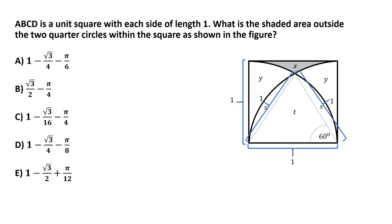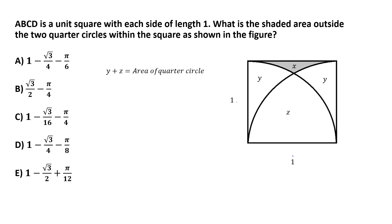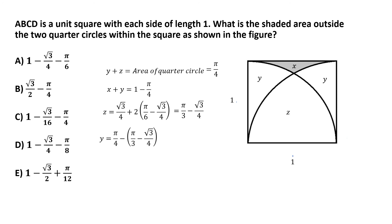To recap: y plus z equals π/4, x plus y equals 1 minus π/4, and z equals π/3 minus root 3 by 4. Substituting z into the first equation, y equals π/4 minus z, which is π/4 minus (π/3 minus root 3 by 4). Working through the math, y equals root 3 by 4 minus π/12.